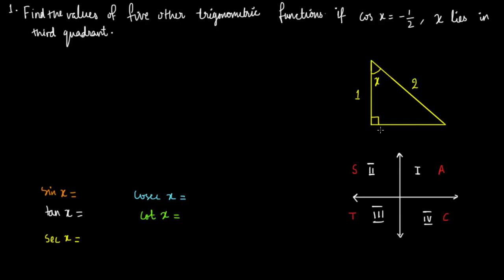So using Pythagoras theorem we can find what this third side is. Let's call it some a. Using Pythagoras theorem, one squared plus a squared is equal to two squared, or a squared equals four minus one which is three. Therefore a is equal to plus or minus root three.